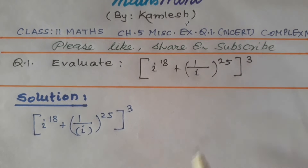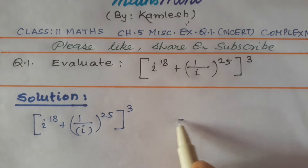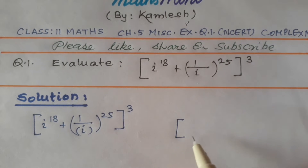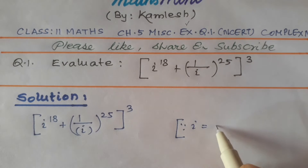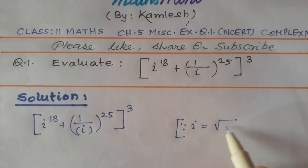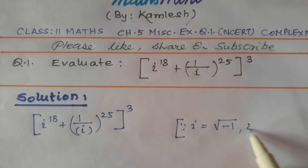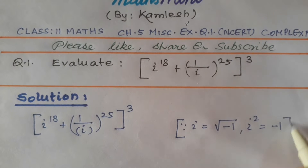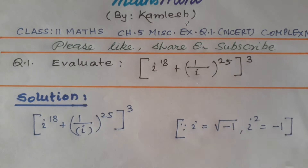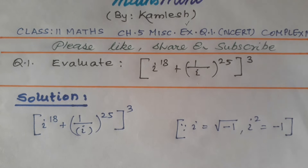So this is the question and we know that since iota equals under root minus 1, so iota squared will be minus 1. This we know, and this will be applied several times in this question.